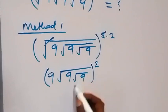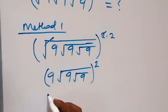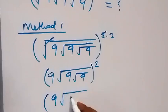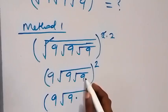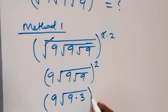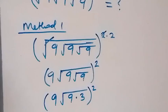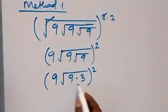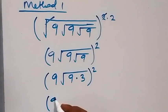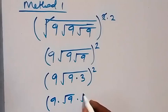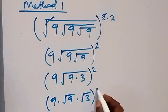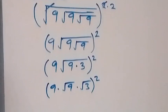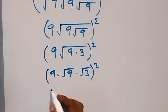The square root of 9 here is 3, and we can write this as 9, then square root of 9, then times 3, then raise to power 2. The same way we can separate this into two roots, and this is 9 times root 9.